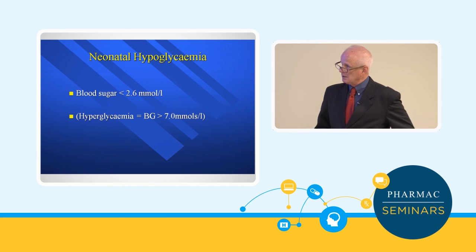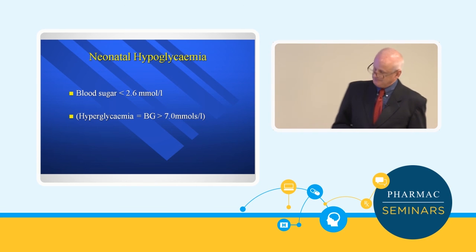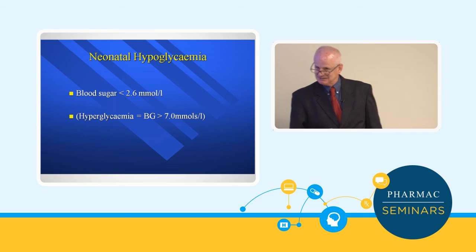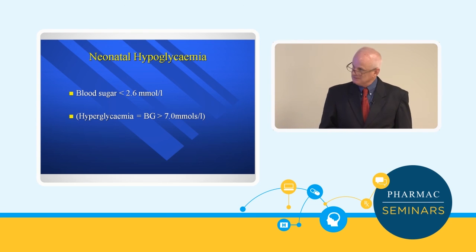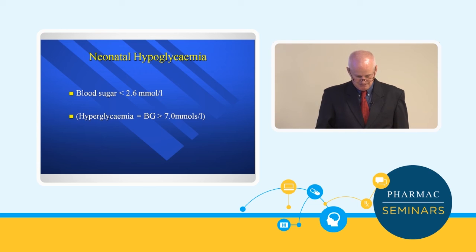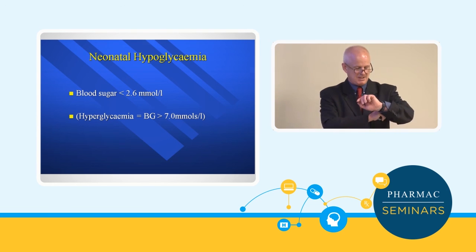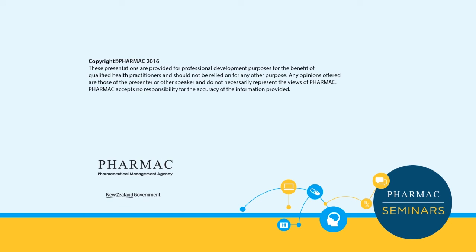Hypoglycemia is a common problem in the newborn period. The magic number is 2.6 mmol/L, and the lack of evidence behind that threshold may be somewhat alarming.